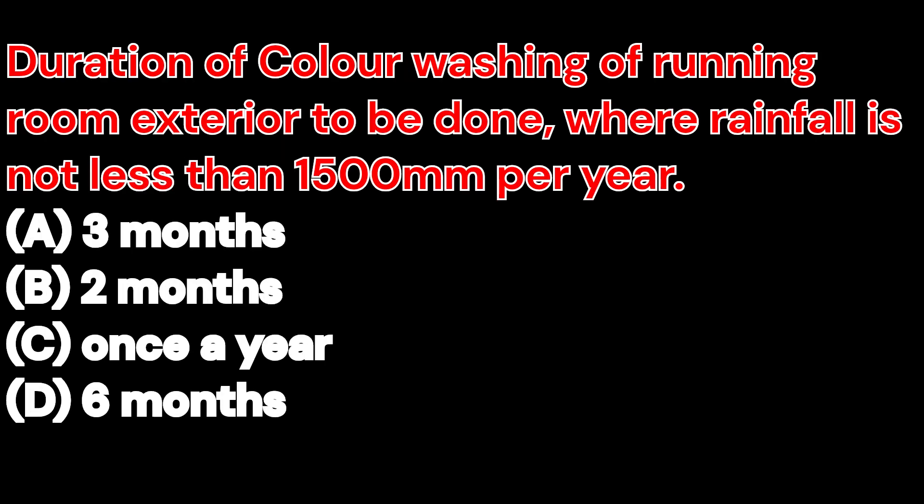Duration of color washing of running room exterior, where rainfall is not less than 1500 mm per year: A. 3 months. B. 2 months. C. Once a year. D. 6 months. And the right answer is once a year.